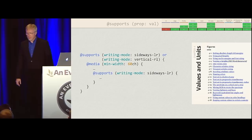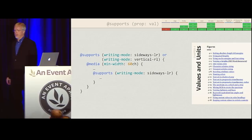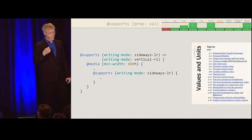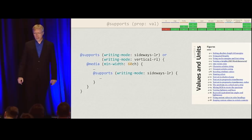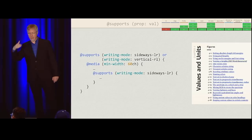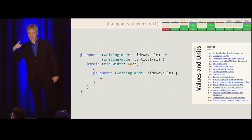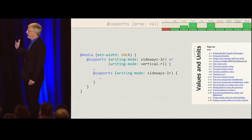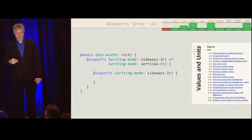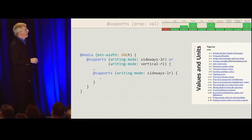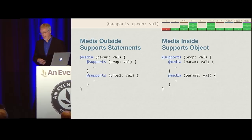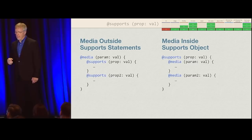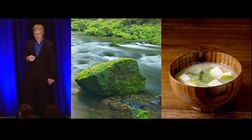You can also combine feature queries with media queries — nesting a media query inside a feature query, or vice versa. This gets to an interesting question: how exactly should you arrange them? You can put the media query outside the @supports blocks, or you can put @supports inside the media queries. I gave these names that were easily turned into acronyms: MOSS and MISO.